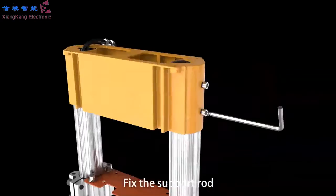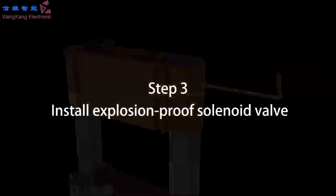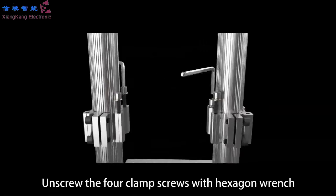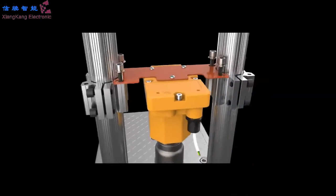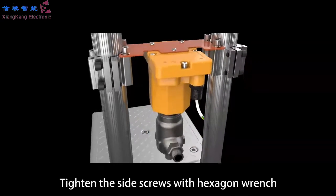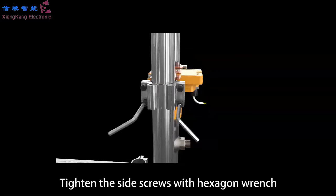Fix the support rod. Step 3: Install explosion-proof solenoid valve. Unscrew the four clamp screws with hexagon wrench. Place solenoid valve screw on. Adjust the overall height. Tighten the side screws with hexagon wrench.